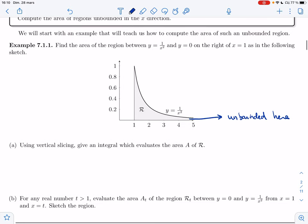Let's start with question (a): Using vertical slicing, give an integral which evaluates the area of R. So the area should be equal to the integral from a to b of top minus bottom. That's what vertical slicing tells us. Now a is the leftmost value of x, so that would be 1. Now this is where the tricky bit comes in.